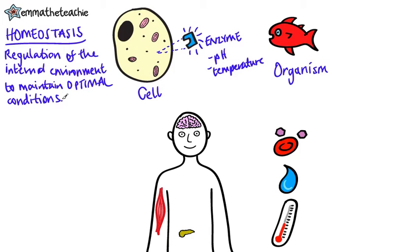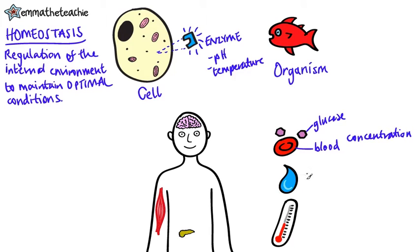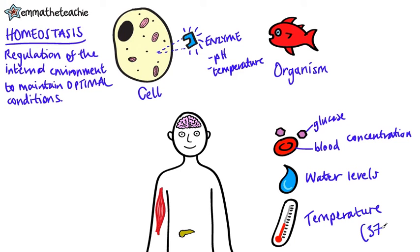There are three conditions that you need to know in humans. The first is the blood glucose concentration, the second are the water levels, and the third is body temperature, which is around 37 degrees Celsius in humans. These all need to be kept at a constant.